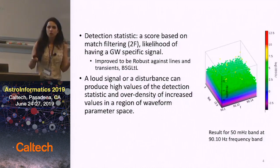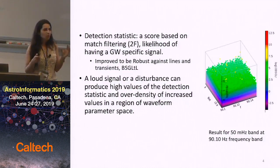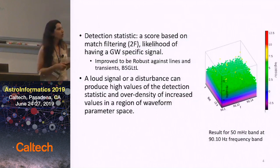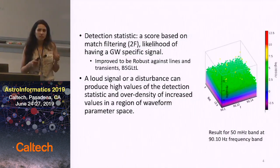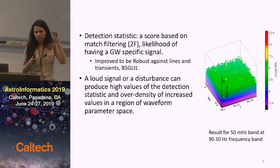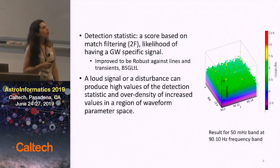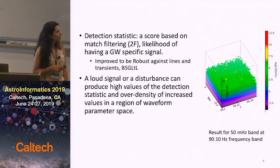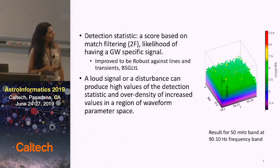The output of the Einstein@Home searches is basically a score for each grid point in the parameter space — which is frequency, frequency derivative, and the two sky location coordinates — giving the likelihood of having a gravitational wave at that point. We call it the detection statistic. Here is an image showing only two dimensions of the data, F and F-dot, where the direction shown represents the value of the detection statistic.